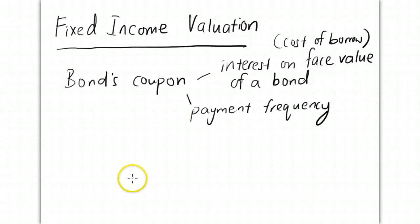Fixed income valuation. For fixed income, we know that they pay coupons. A bond's coupon is interest on its face value. This interest represents the cost of borrowing to the bond issuer.